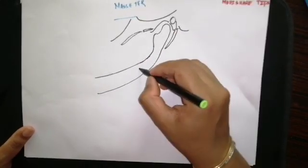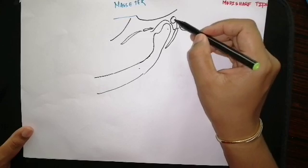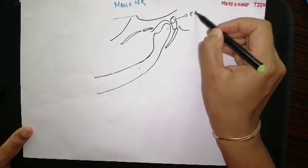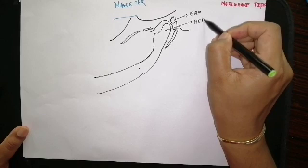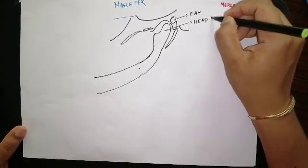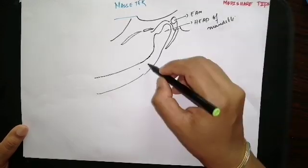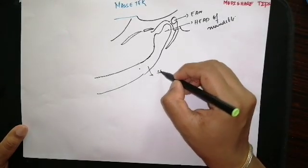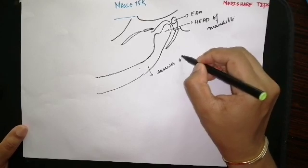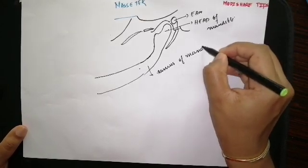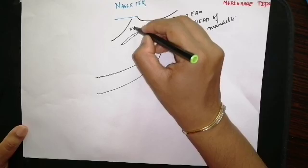This is the ramus of mandible, this is the head of mandible, this is the external acoustic meatus, and this is the zygomatic arch.